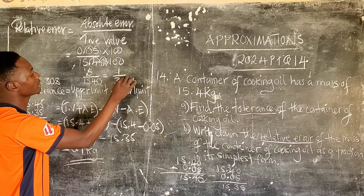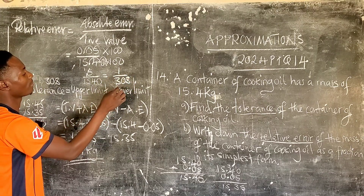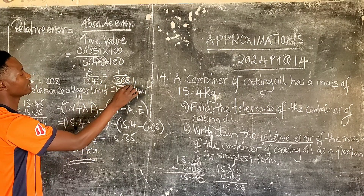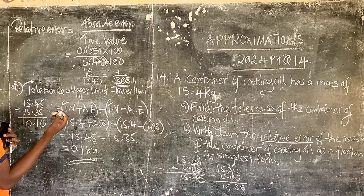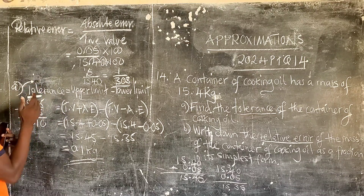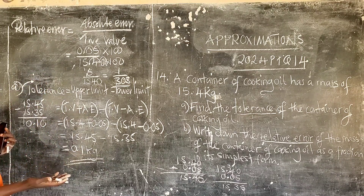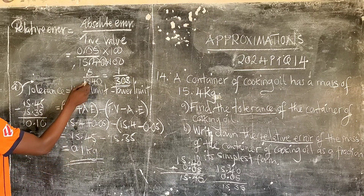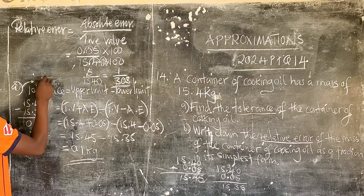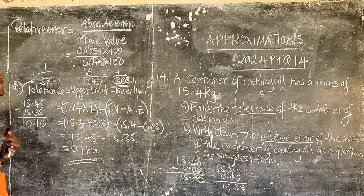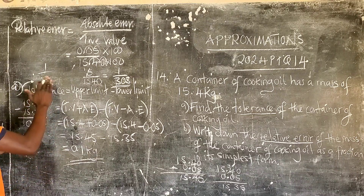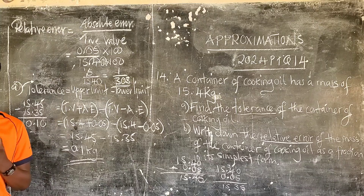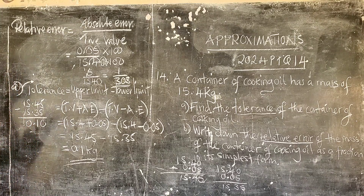So the relative error in its simplest form is 1 over 308. Is this in its simplest form? Yes, it is. Now, the mistake that you can make here is dividing directly without writing the leading zero — some of you may go 5 into 15 is 3, 5 into 40 is 8, and write 1 over 38. That is a mistake. You should not do that — always account for the leading zero to get 1 over 308.